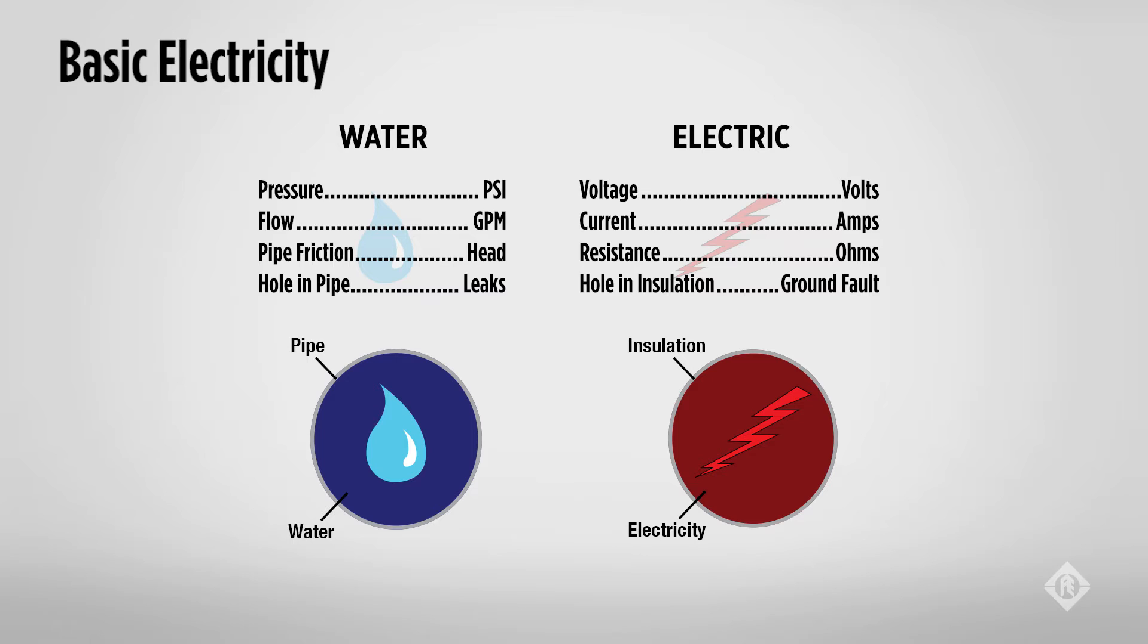There is one important difference between a water system and an electrical system. An electrical system is closed. That is, the flow of current should never leave the system. If it does, that's called a ground fault which we will talk about later. A water system however is open. In most cases we discharge the water and it leaves the system. Perhaps an exception would be a closed-loop geothermal heating system.